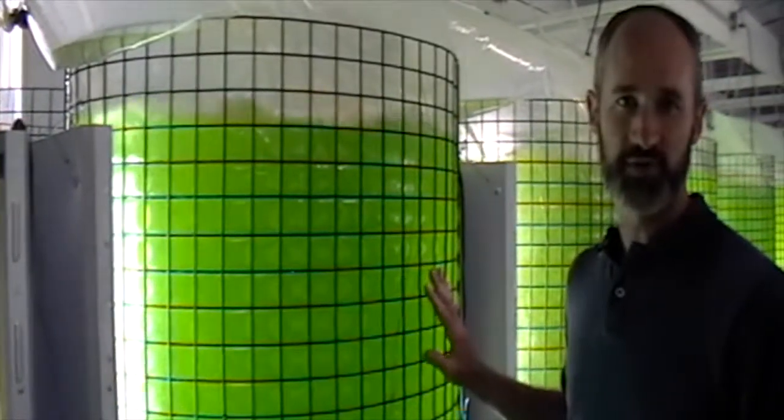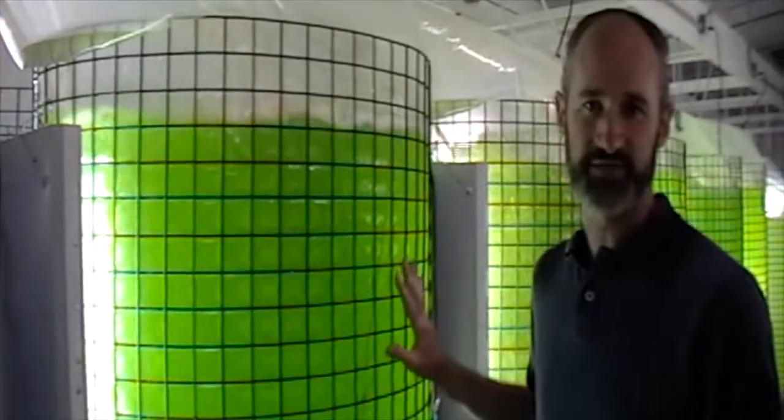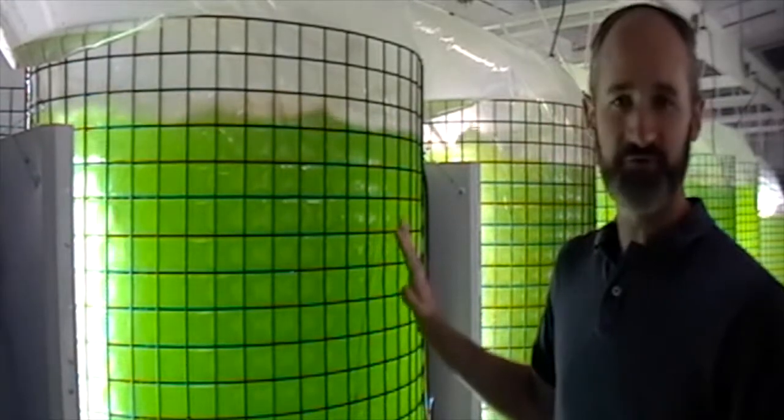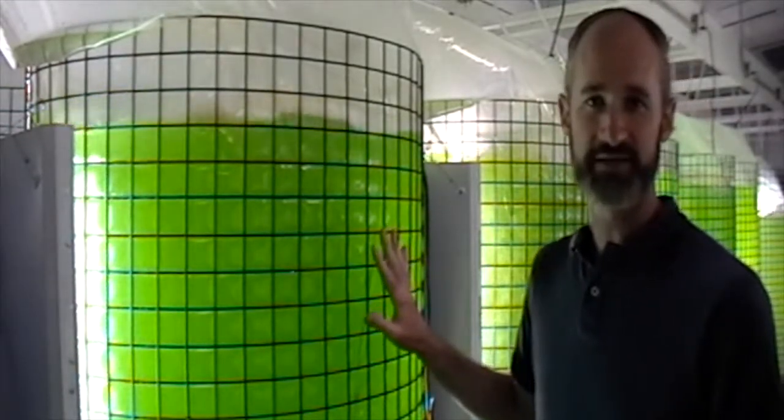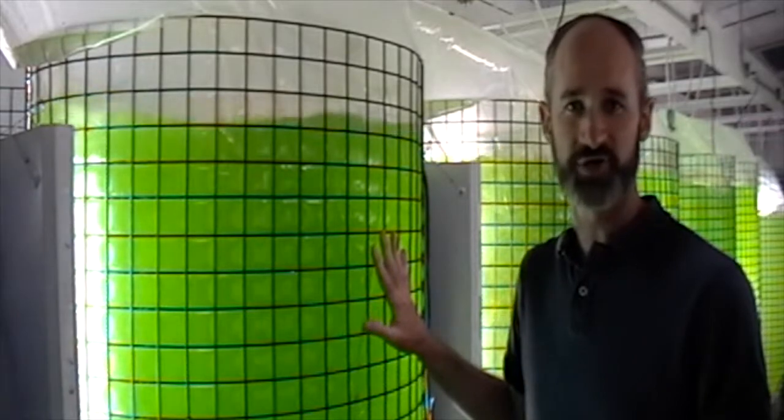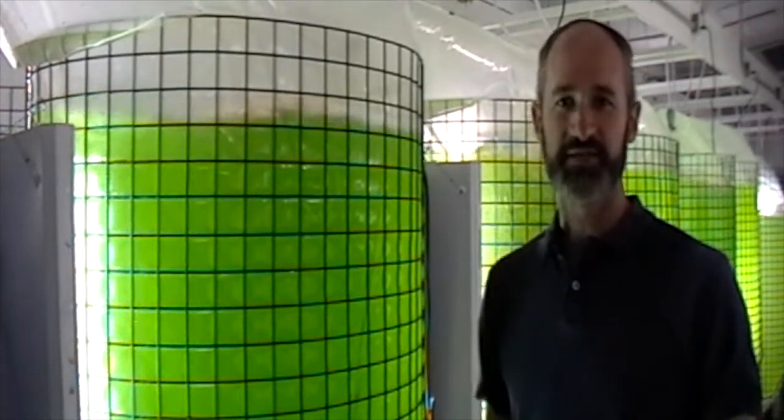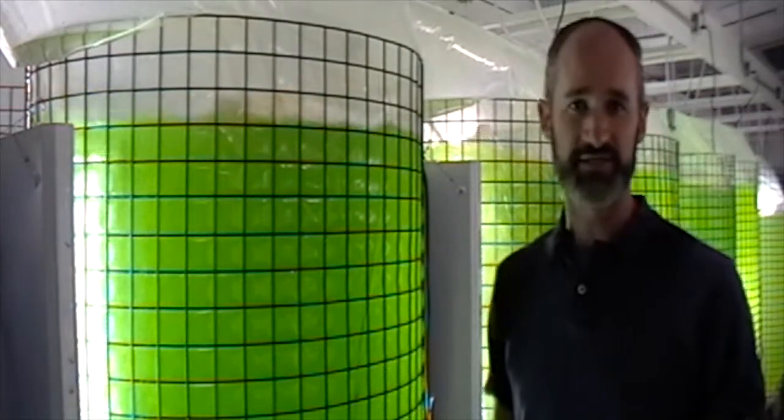The first step in growing rotifer mass culture is to establish a healthy culture of algae in one of these reactors. After 10 to 14 days of growth with the phytoplankton, we can add in a rotifer starter culture. The species of microalgae we're using in this case is tetracelmus, but it's possible to use other species as well.